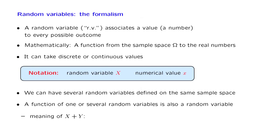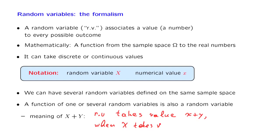As an example, we could think of two random variables X and Y associated with the same probabilistic experiment, and then define a random variable X plus Y. X plus Y is a random variable that takes the value little x plus little y when the random variable capital X takes the value little x and capital Y takes the value little y. So X and Y are random variables, X plus Y is another random variable. They take numerical values once the outcome of the experiment has been obtained.